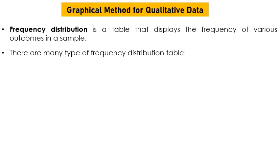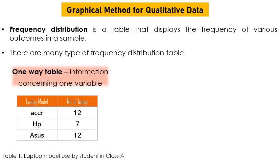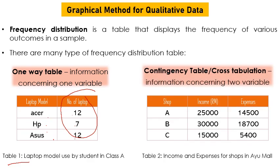Graphical method for qualitative data: a frequency distribution is a table that displays the frequency of various outcomes in a sample. There are many types — a one-way table contains information concerning one variable. For example, laptop model: Excel 12, HP 7, Asus 12. The title is 'Table 1: Laptop model used by students in Class A.'